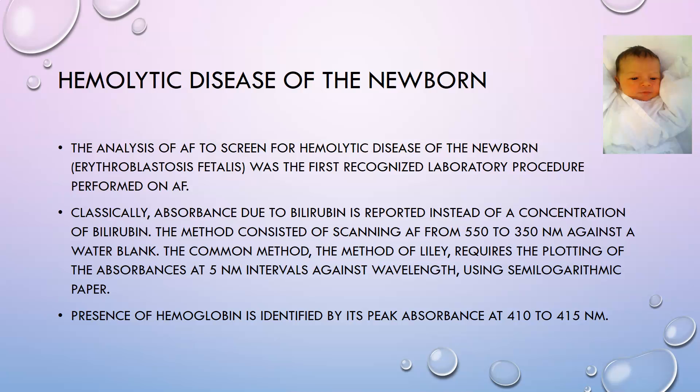The common method, which is the method of Liley, requires plotting absorbances at 5 nanometer intervals against wavelengths using semi-logarithmic paper, and the presence of hemoglobin is identified by its peak absorbance at 410 to 415 nanometers. Now, what we're doing today for hemolytic disease of the newborn is testing the mom to see if she is RH-negative, and giving her RhoGAM if she is RH-negative. That's how we mostly screen for and prevent hemolytic disease of the newborn from occurring in the first place.